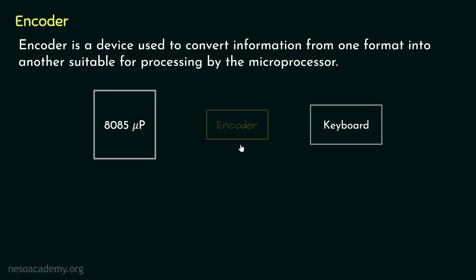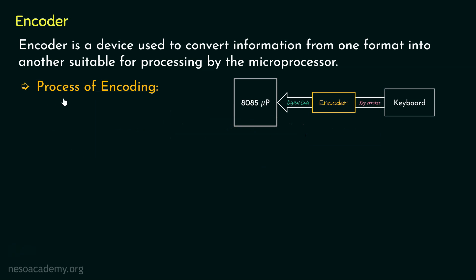Now in this context, the encoder will be placed in between and it is actually employed to translate the keystrokes into a digital format or a digital code so that the microprocessor can understand and process the keystroke. Let me explain the entire process of encoding. So at first, the keyboard input will come from the keyboard. Basically, when a key on the keyboard is pressed, it generates a unique electrical signal corresponding to the key.